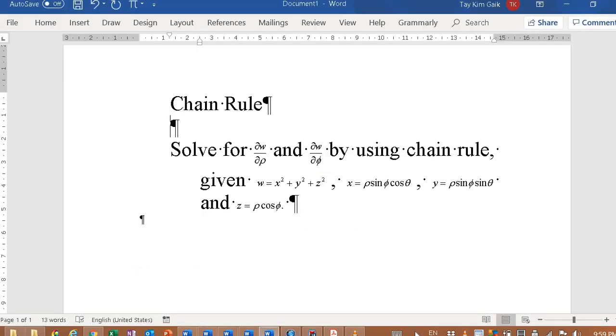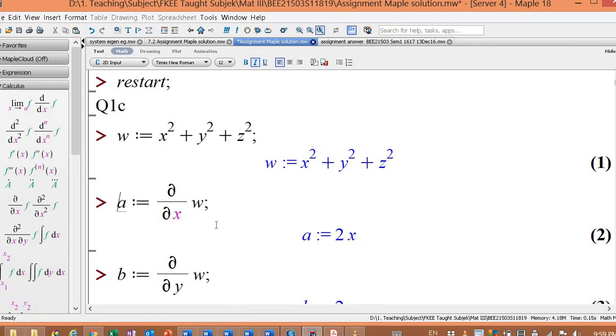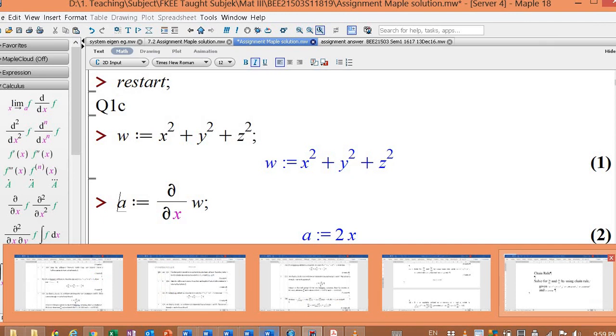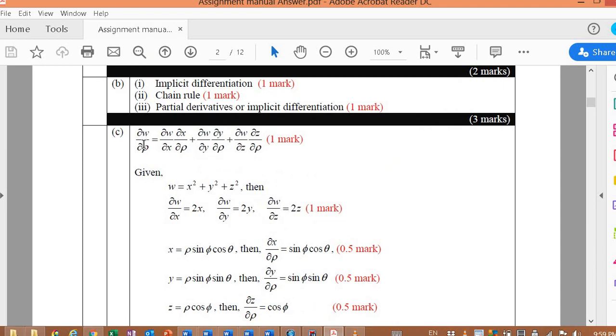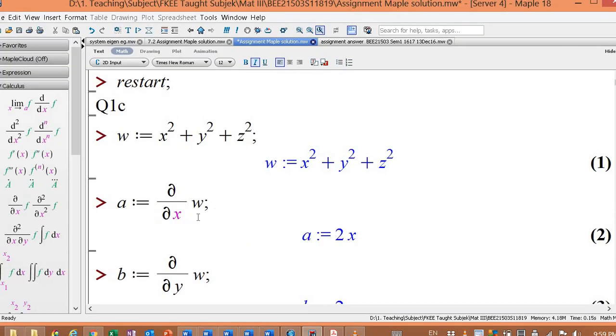And we're going to define x, y, z as equations into Maple. Okay, before that, since we want to find del w del rho, we need to find del w del x multiply del x del rho plus del w del y multiply del y del rho plus del w del z multiply del z del rho. So here, find the first partial derivative del w respect to x, y, z. I assign del w del x into a variable a.